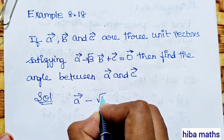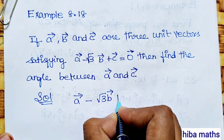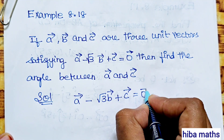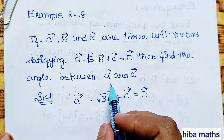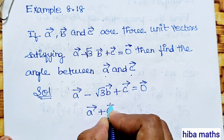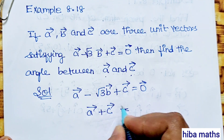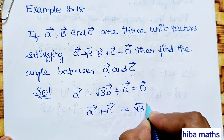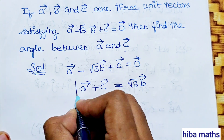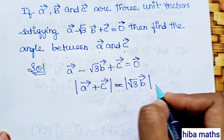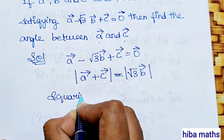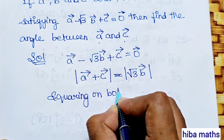Given: a vector - √3 b vector + c vector = 0 vector. We rearrange this as a vector + c vector = √3 b vector. Now squaring on both sides.